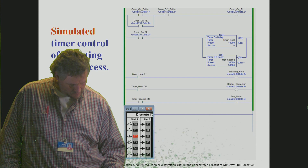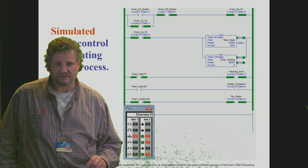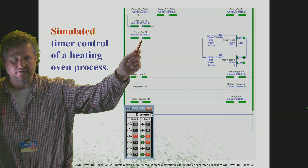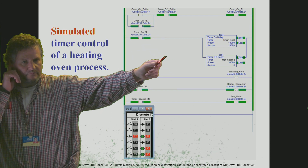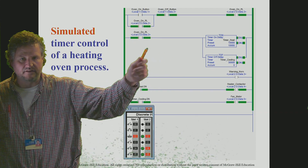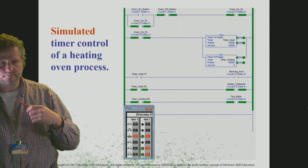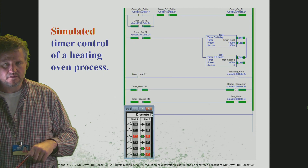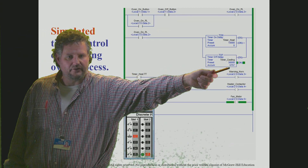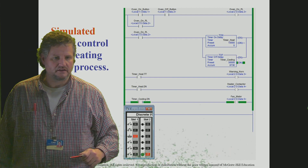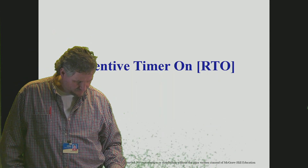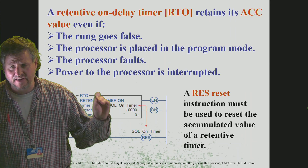Here's a simulated timer control over a heating process. You're seeing when that input is on, the timer-on times. Once it's done timing and you turn the input off, you'll see the timer-off actually start timing — the done bit is on right now and it's running.